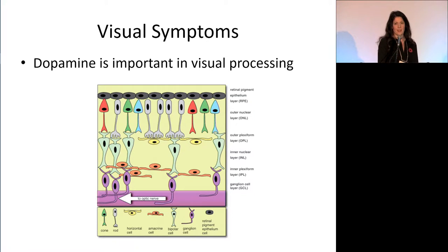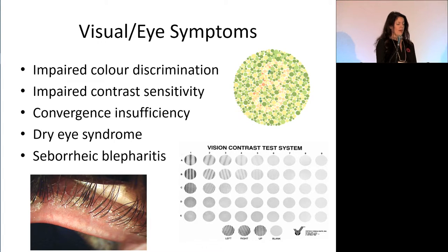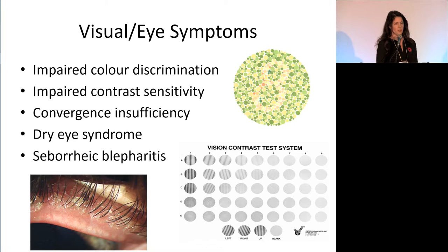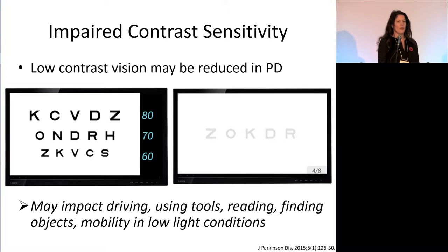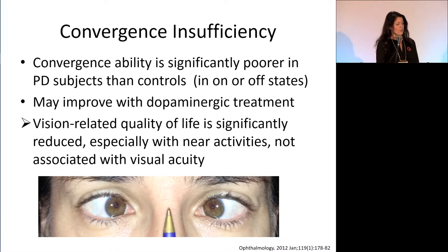The visual system is also affected in Parkinson's, which is not well known. Some retinal neurons use dopamine, so if the dopamine system is deficient you may have visual problems. People with visual issues can describe impaired color discrimination, impaired contrast sensitivity, convergence insufficiency, dry eye syndrome, and seborrheic blepharitis — a skin condition affecting the eyelids. Impaired contrast sensitivity means difficulty telling apart things that are similar in color; light gray letters on a white background may be hard to see, impacting driving, reading, using tools, and mobility in low light.